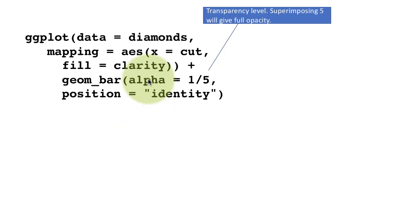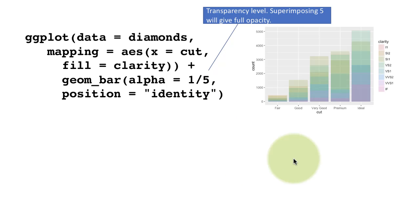This parameter alpha equals something controls how transparent it is. One-fifth basically says, make it such that if I put five of them one on top of the other, then I will get back the original color. Superimposing five will give us full opacity. So now when you do that, you see that the things become a little more transparent, and it is possible that we are able to see more colors in some of the bars.